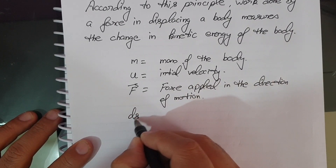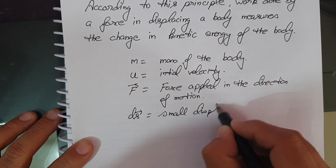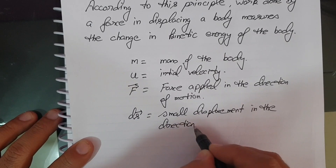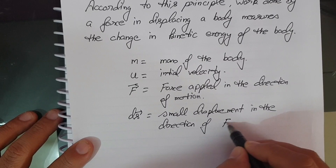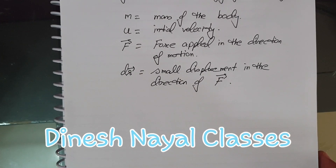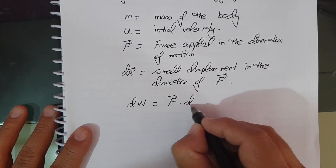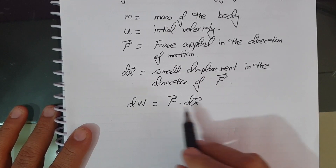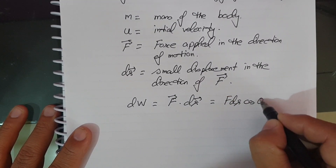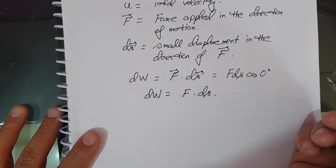ds is the small displacement of the body in the direction of force. The small amount of work done by the force is dW, which equals F·ds. Since the force and the small displacement ds are in the same direction, this is F·ds·cos(0°), and since cos(0°) = 1, dW = F·ds.